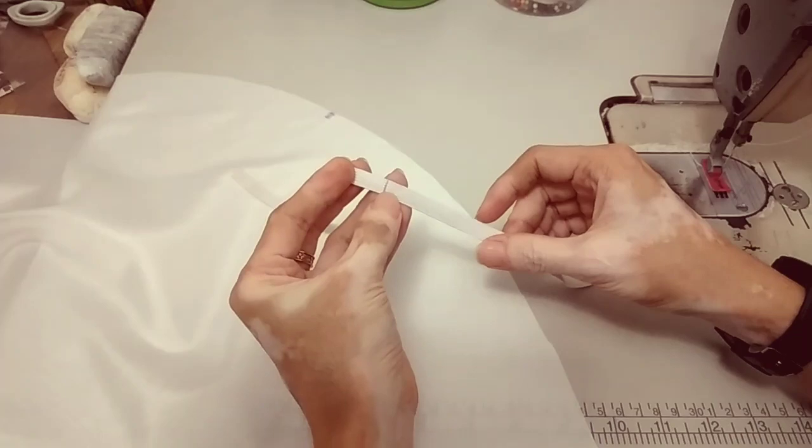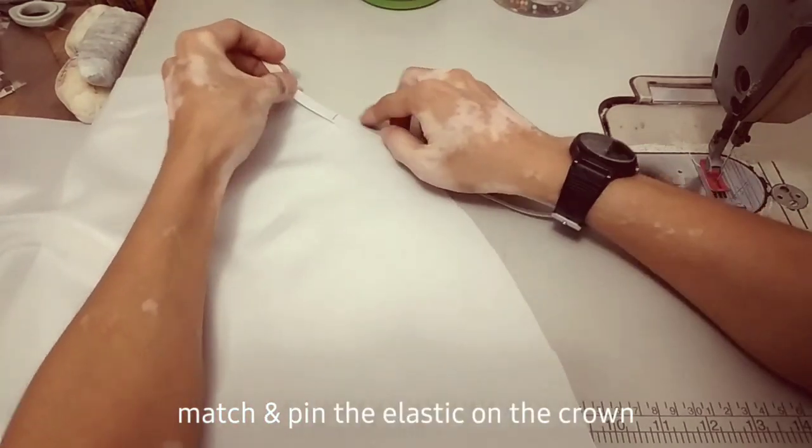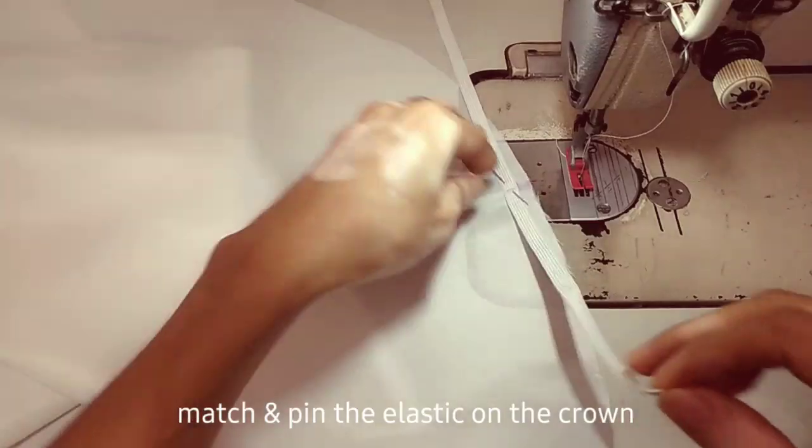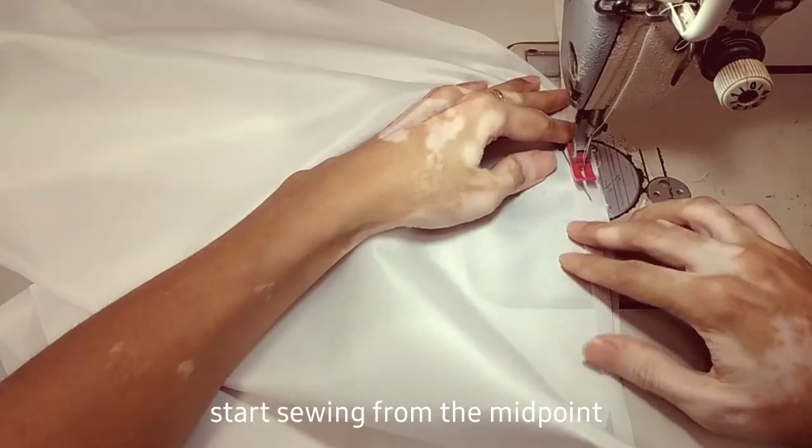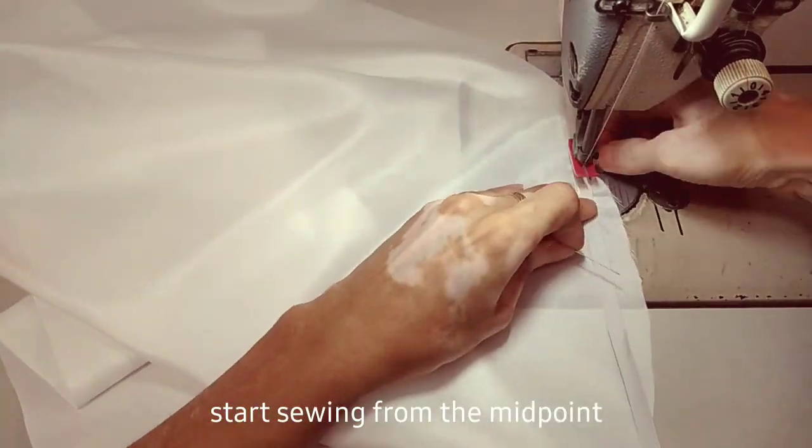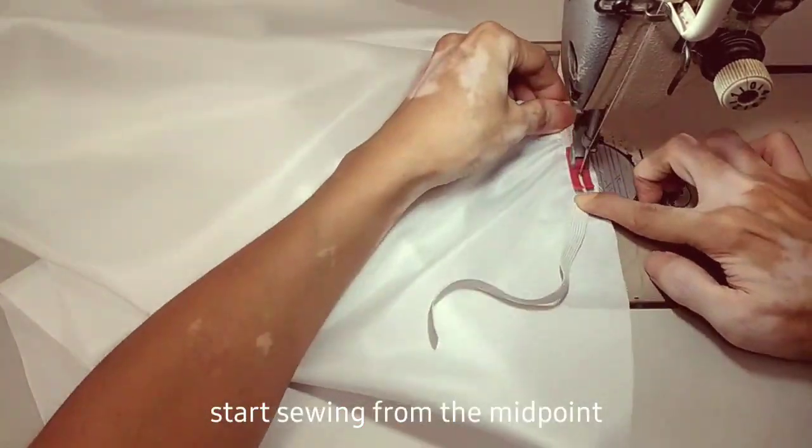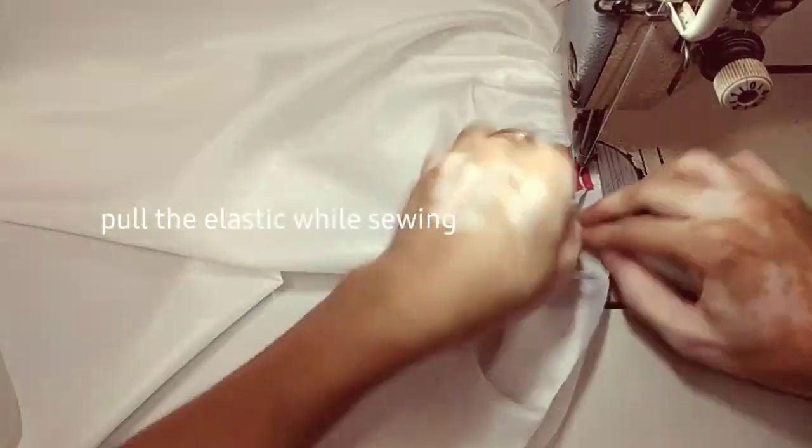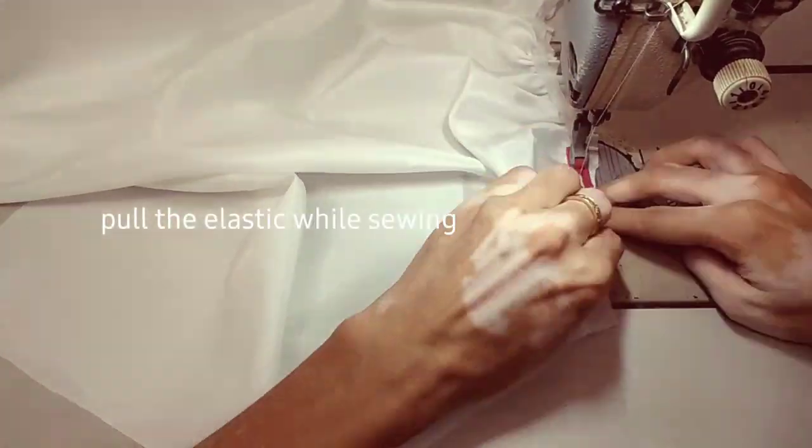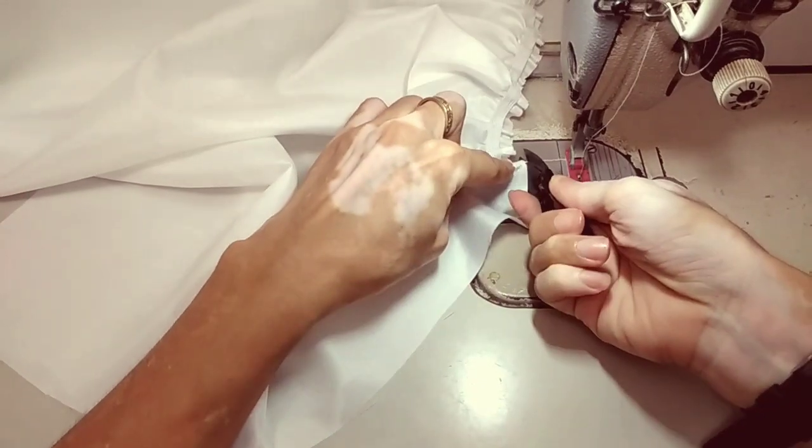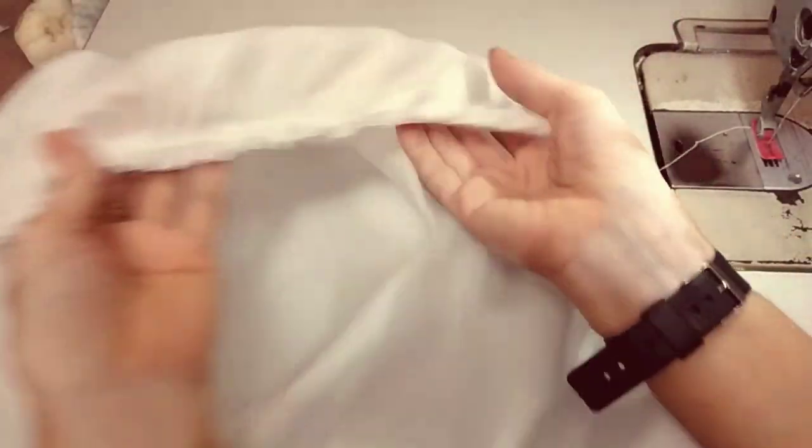First, match the mark of the elastic to the center of the crown, and then while sewing it, keep pulling the elastic. This is how it looks when you attach the elastic on the other side.